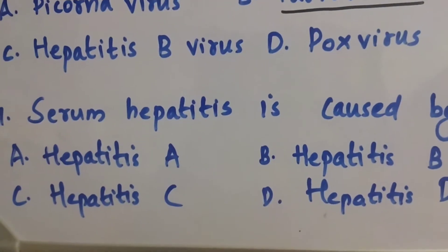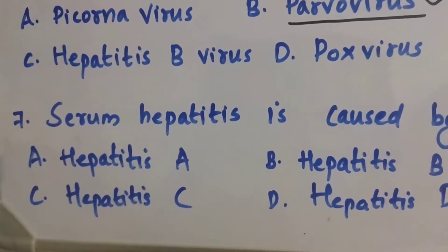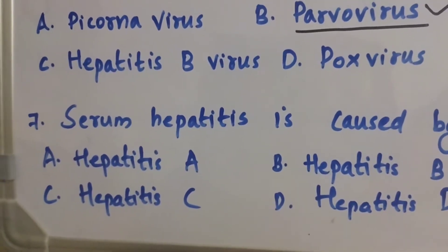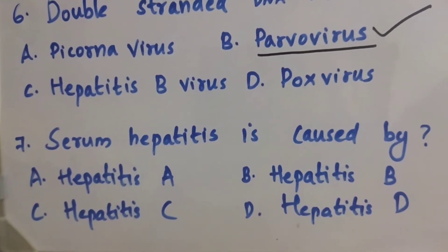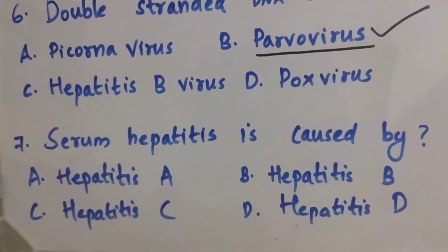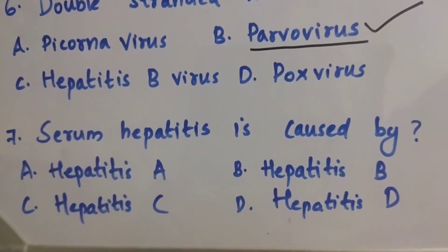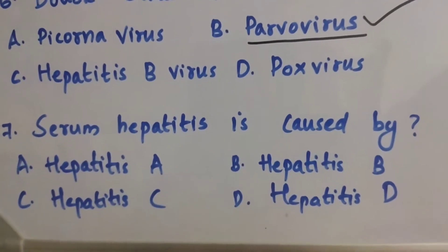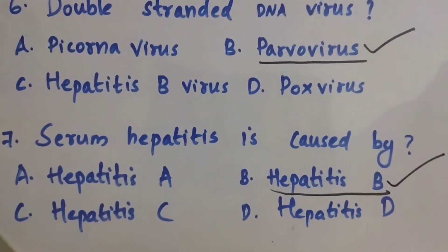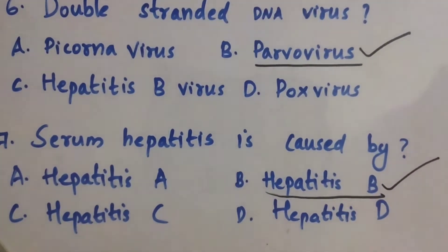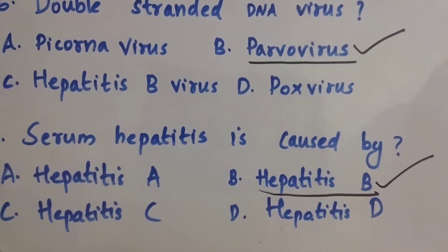Question number 7: Serum hepatitis is caused by — Option A: Hepatitis A. Option B: Hepatitis B. Option C: Hepatitis C. Option D: Hepatitis D. The right answer is Option B, Hepatitis B. Serum hepatitis is caused by Hepatitis B.